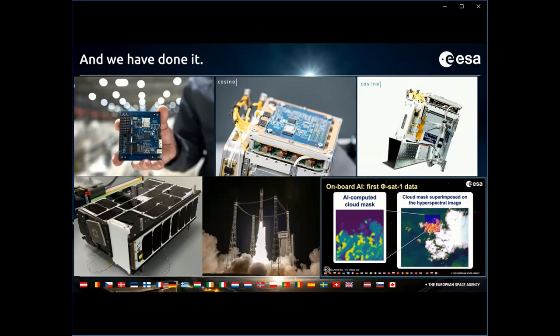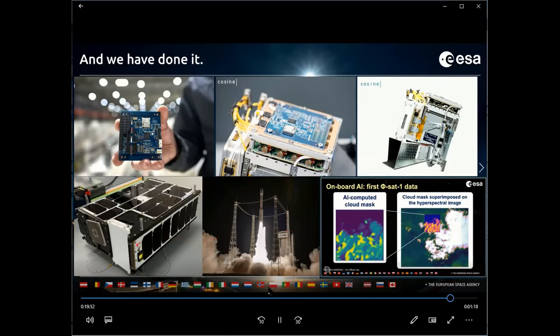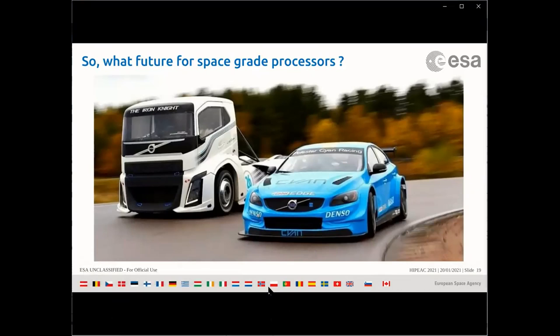We have done it in the recent past: we took the Movidius chip and flew it on a mini-satellite that returned the first AI-computed data on the ground. We used AI to compute cloud mask and filter images with cloud — these are hyperspectral images. The satellite has been on orbit and working since September last year, and so far this has been very successful.